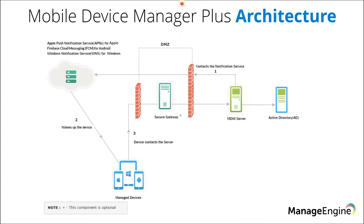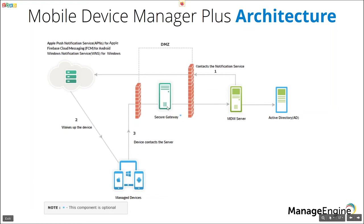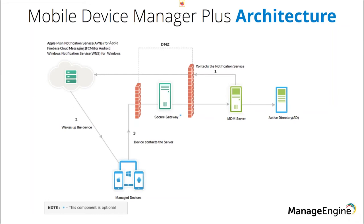To illustrate the architecture, there are three major components involved in managing a mobile device. First, the MDM server — which can be on-premise or, if you prefer a SaaS-based solution, MDM cloud. Second, the notification services: for Apple it's Apple Push Notification Service, for Android it's Firebase Cloud Messaging, and for Windows it's Windows Notification Services. Third, the mobile device itself — these are the three major components.